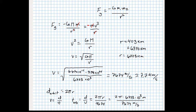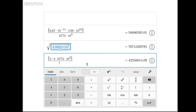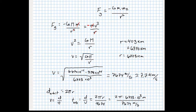Calculating that: 2π × 6,773 × 10³ divided by 7,674 gives approximately 5,545 seconds, which divided by 60 equals 92.5 minutes.